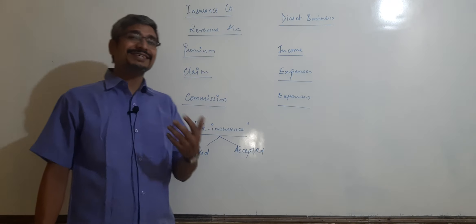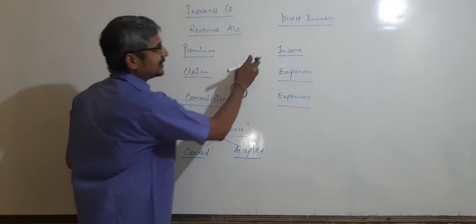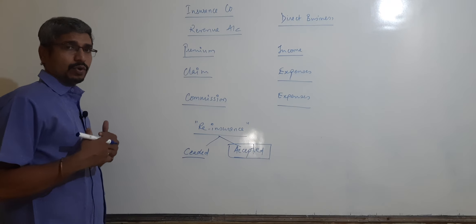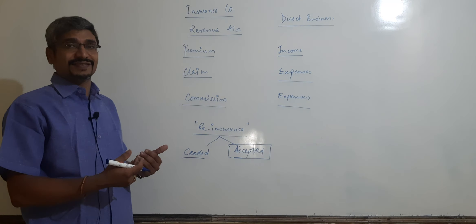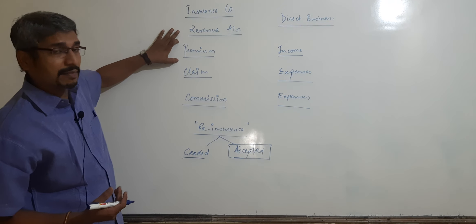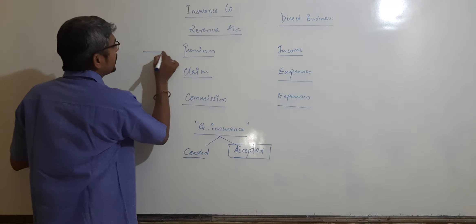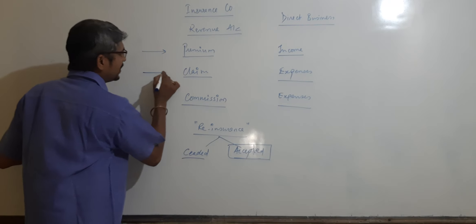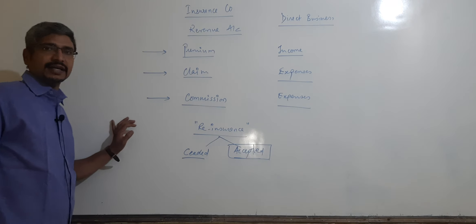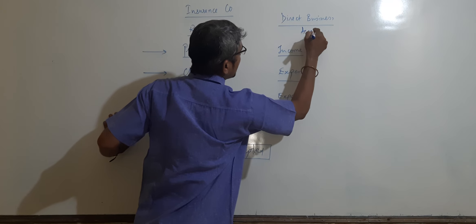So, reinsurance ceded and reinsurance accepted - these two parts. To understand whether that is income or expenses. In case of reinsurance accepted, the premium is income and the claim will be expenses for the company as well as commission. So in our accepted case, it will be same for direct business and accepted.